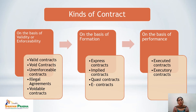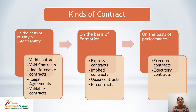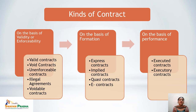Quasi contracts are those in which initially there is no intention to make a contract by either party. For example, if someone finds lost goods where the owner is unknown, it is the duty of the finder to find the true owner and return the goods. A relationship arises between the finder and the owner of the lost goods even though no such contract or intention existed between them.